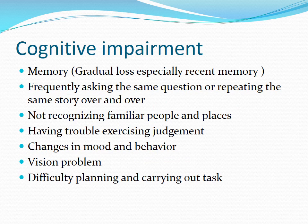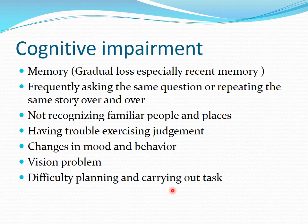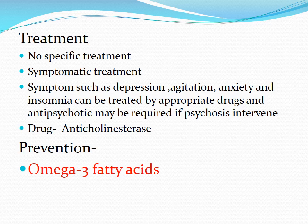Patients with cognitive impairment present with the following symptoms: memory loss, frequently asking the same question or repeating the same story over and over, not recognizing familiar people and places, trouble in exercising judgement, changes in mood and behaviour, vision problems, and difficulty in planning and carrying out tasks. The patient may feel that nothing is wrong with them, and it is often their attendant who brings them to a medical specialist.